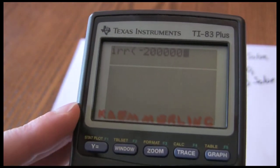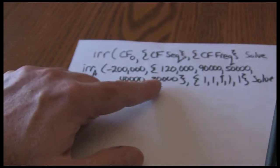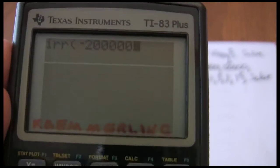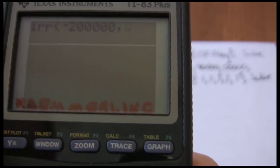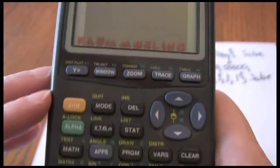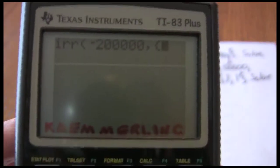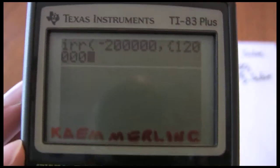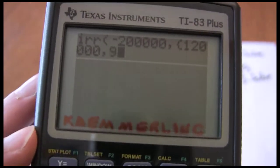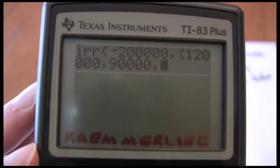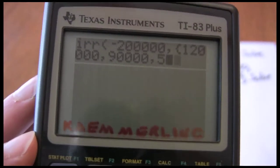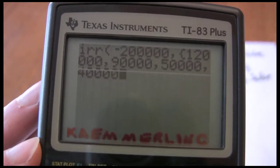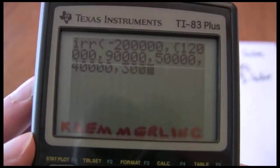Once we have that in, then we want to go to our cash flow sequence. So 200,000, comma, and we want the little squiggle bracket: 120,000, 90,000, 50,000, 40,000, and lastly 30,000.